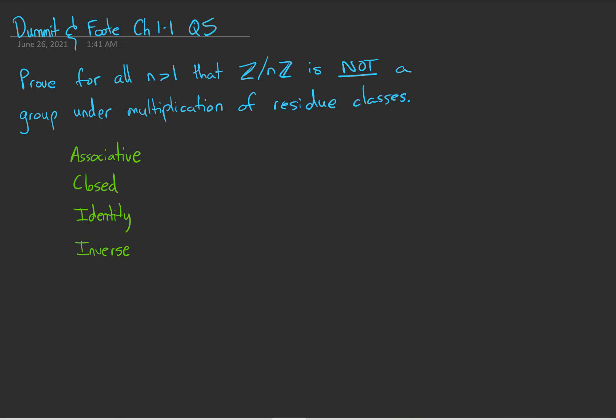In Question 4 of this chapter, we proved that multiplication of residue classes is associative. So the first property is satisfied.